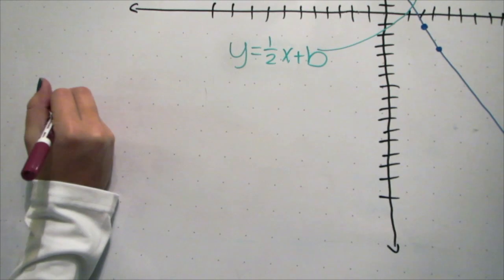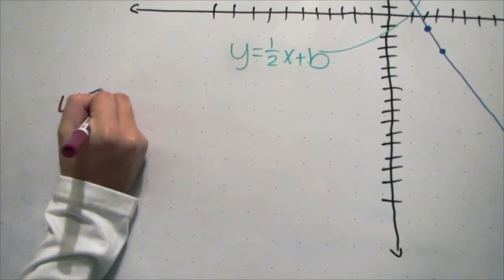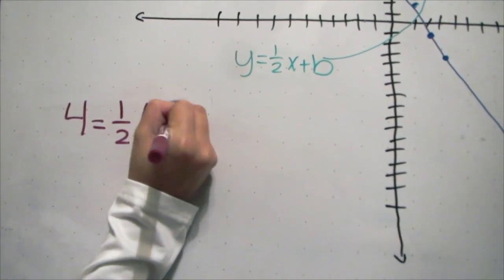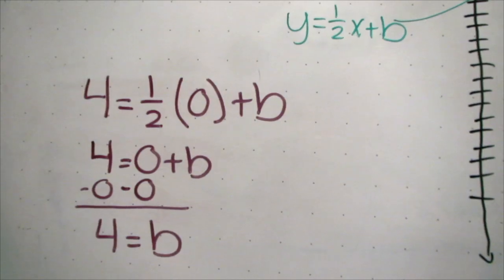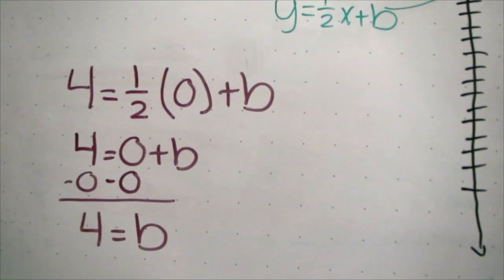Y equals mx plus b. Y equals the slope times x plus the y-intercept. You find the b by substituting in x and y. In this case, it's 4 equals 1/2 times 0 plus b. In this case, the answer is b equals 4.